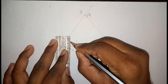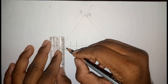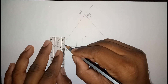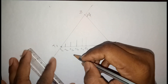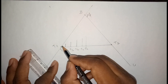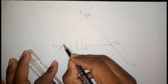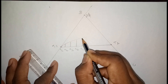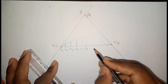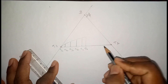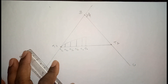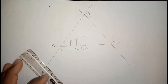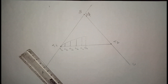You will find the ordinate distances reduce as you go toward T1. Join all the points — this is your half curve. The same curve will be on the other side; you just copy that curve to complete the full curve.